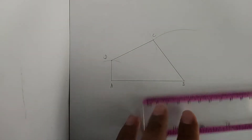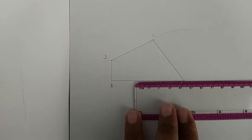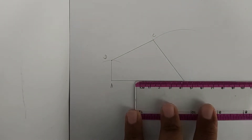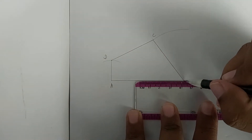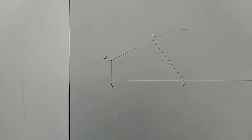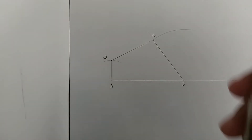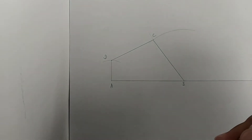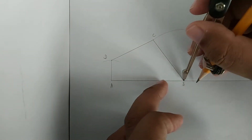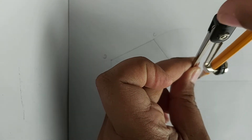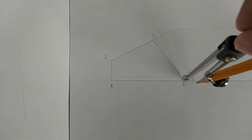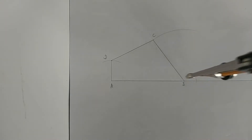Now that you have your quadrilateral constructed, the next step is to extend line AB. Once you extend that line, you have to take note of the ratio — remember it's a reduction and the ratio is 3 to 5. So I'm going to open my compass to a small radius and then from point B I'm going to scribe five arcs, all the same distance apart.